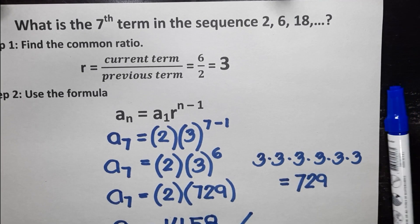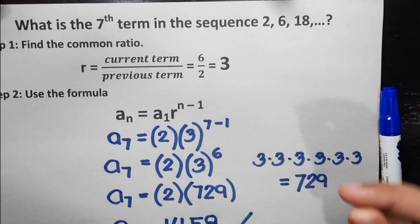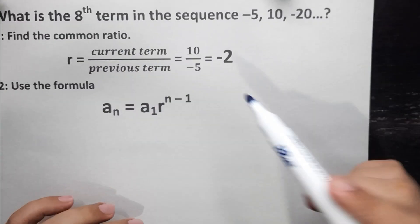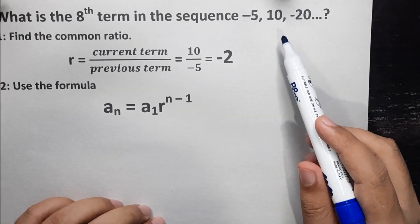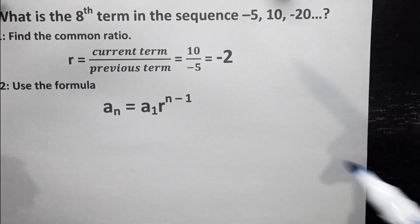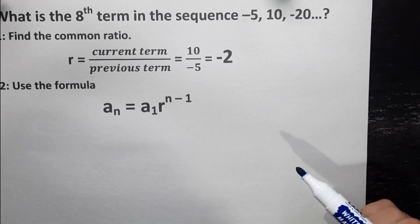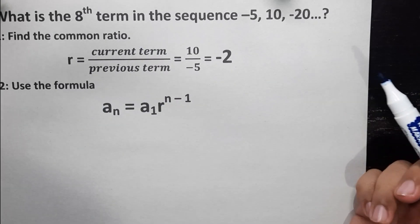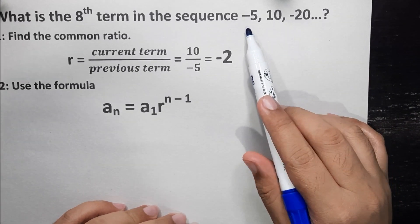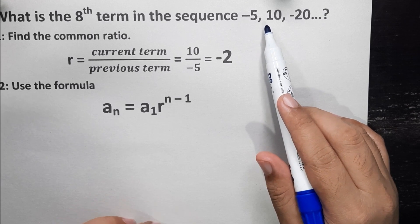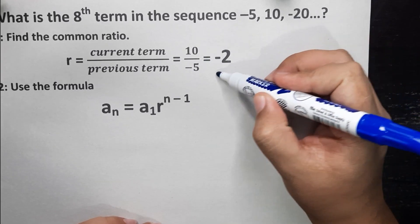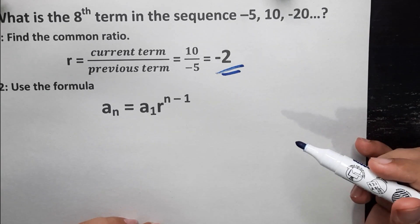For our next example: what is the 8th term in the sequence negative 5, 10, and negative 20? First, we identify the common ratio. Using 10 as the current term and negative 5 as the previous term, 10 divided by negative 5 gives us a common ratio of negative 2.